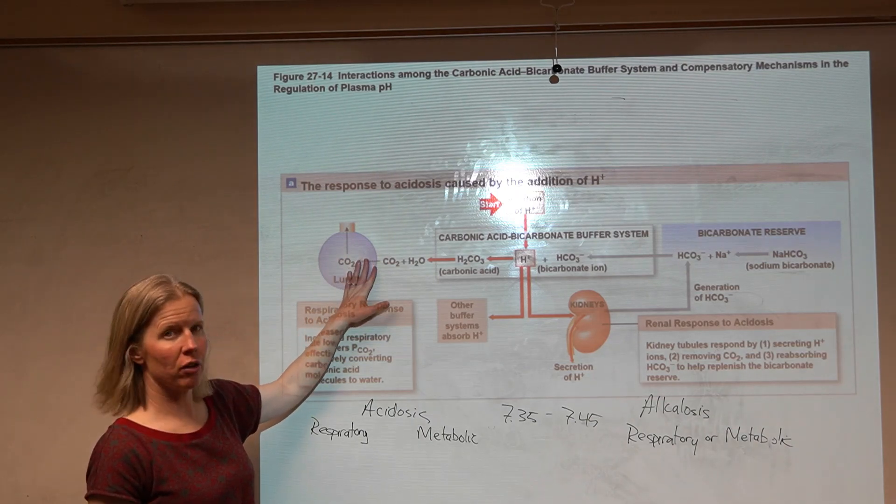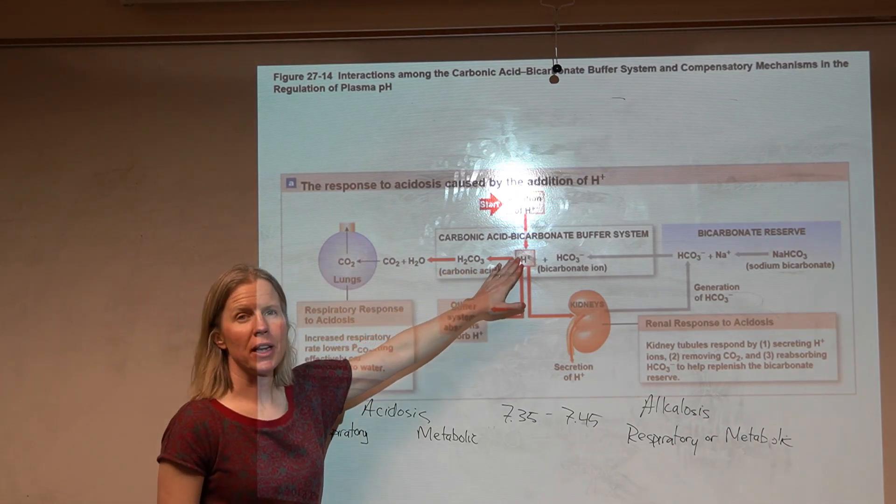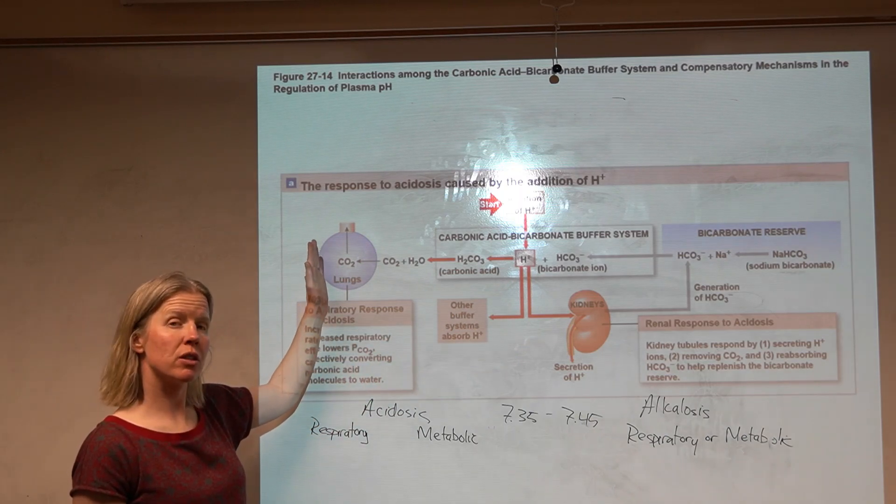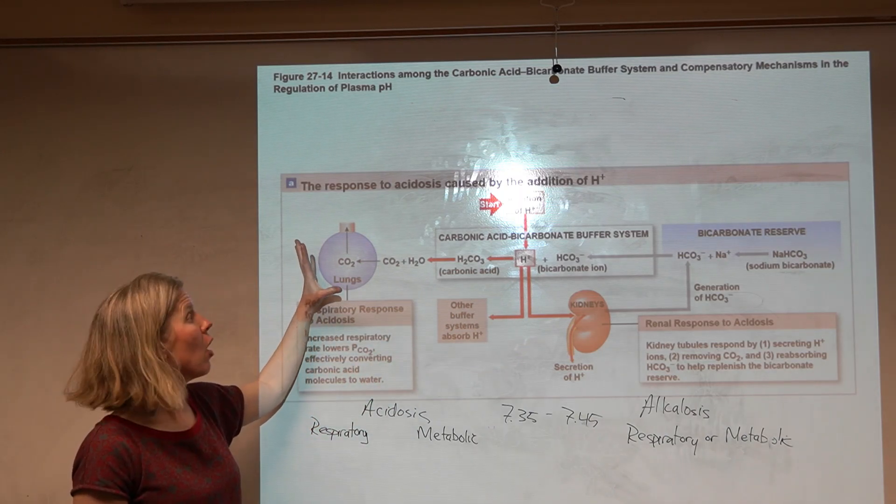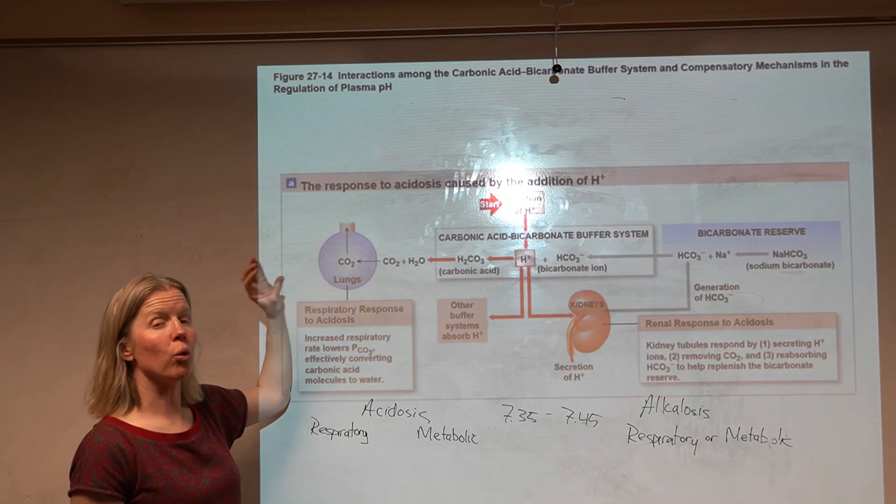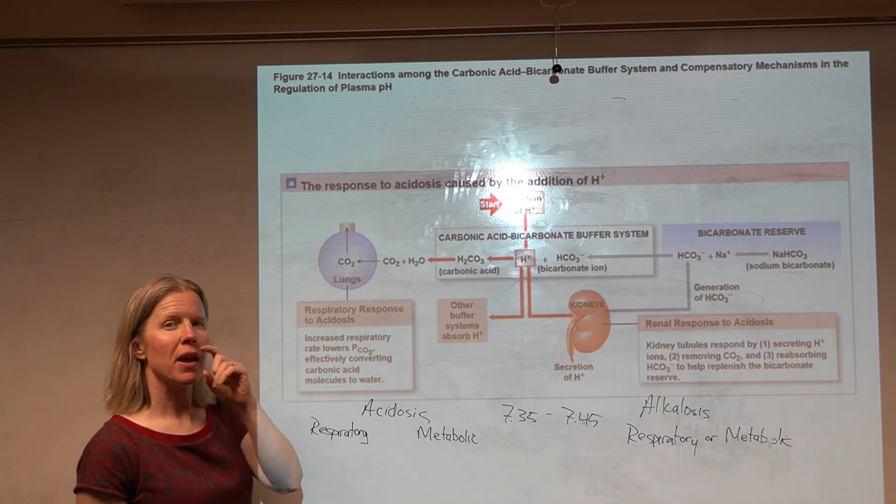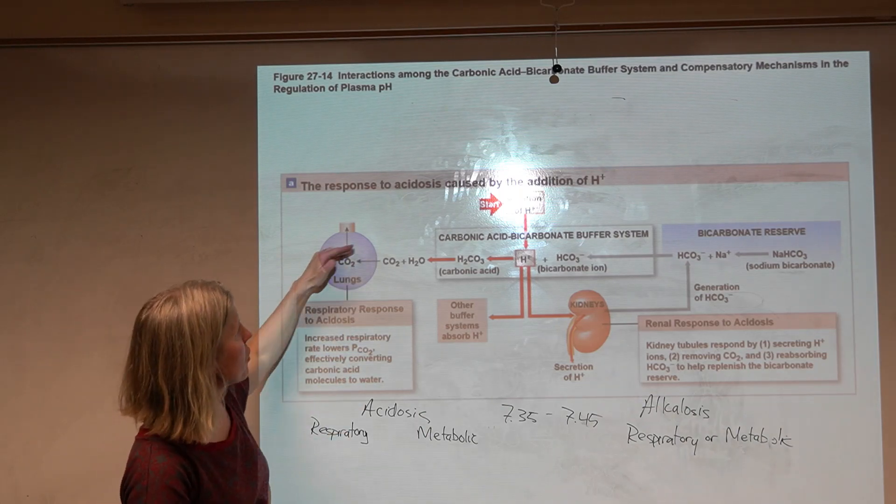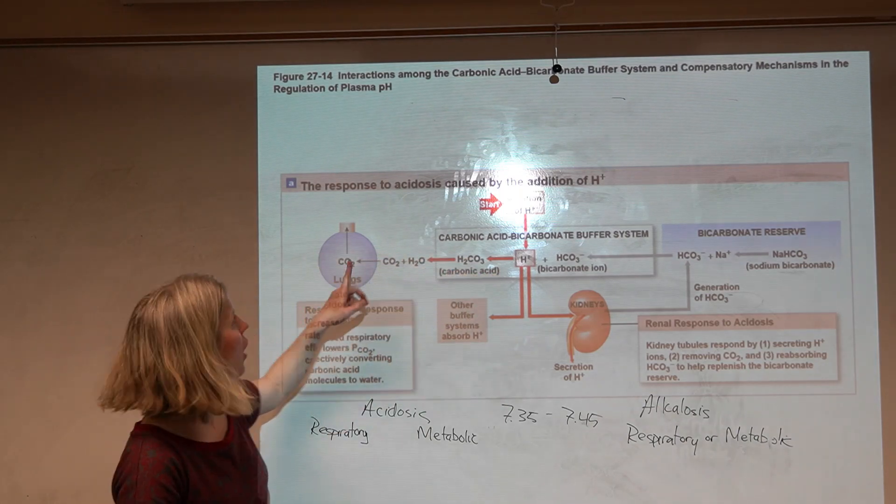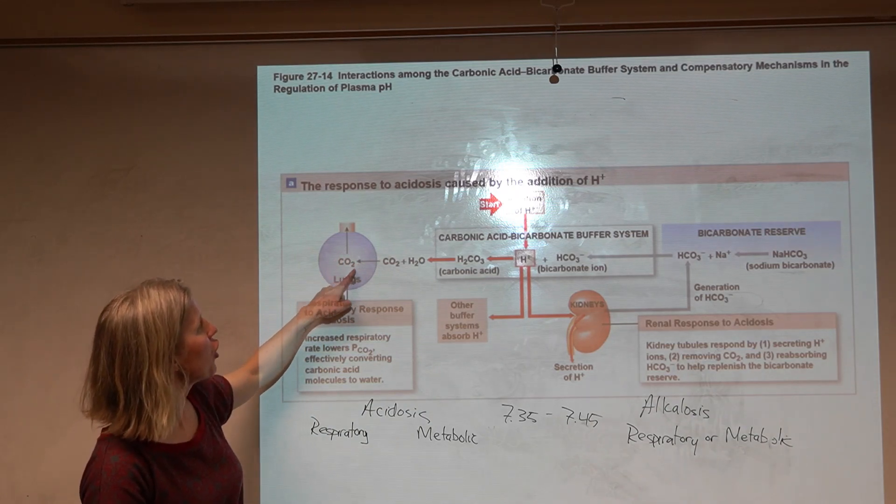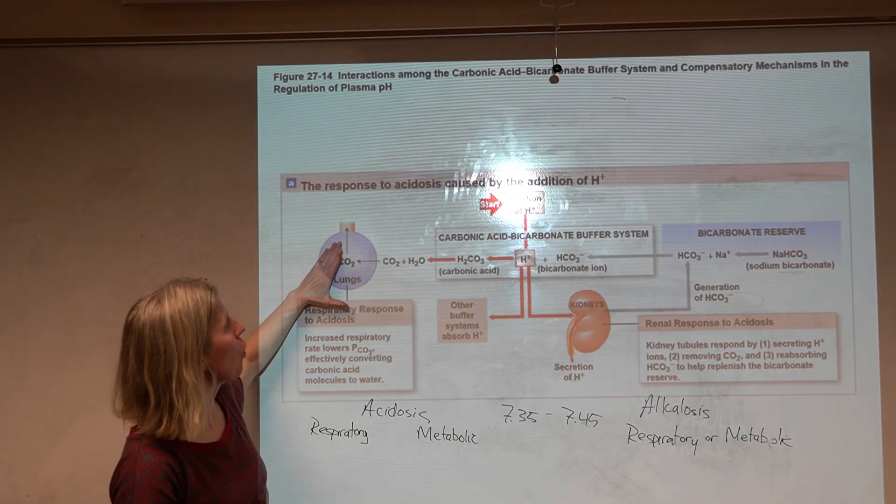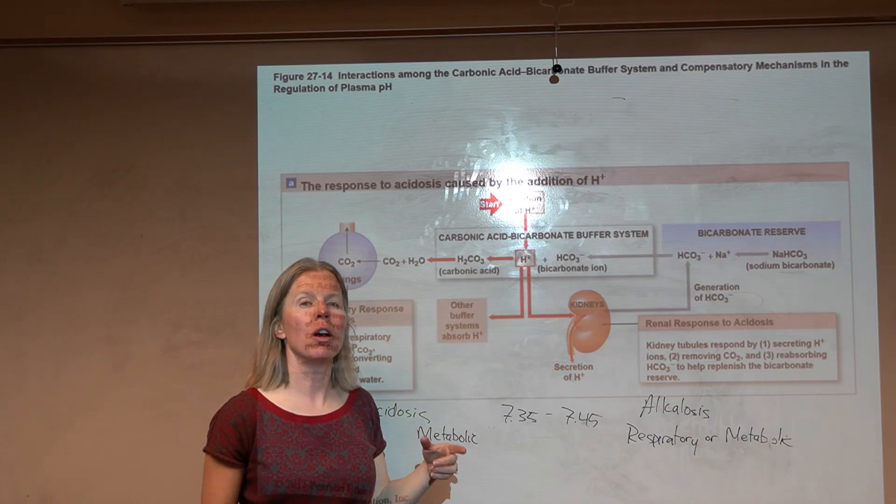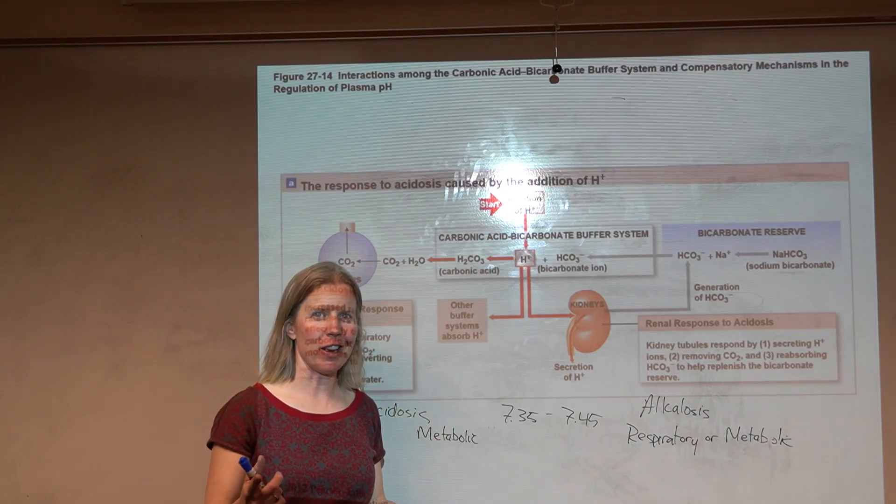Let's think through this one together. What kind of problem here would lower pH? Would we be breathing off lots of CO2 to lower pH, or would we be holding our breath and holding on to CO2? Remember, this is a reversible reaction. If we start accumulating CO2, we'll push the equation to the right, and that gives us more hydrogen.